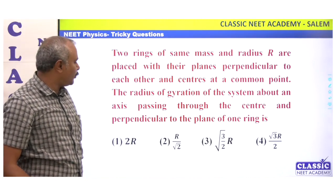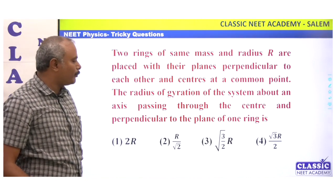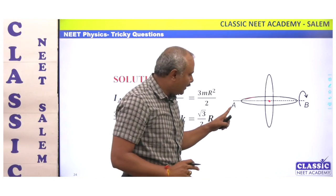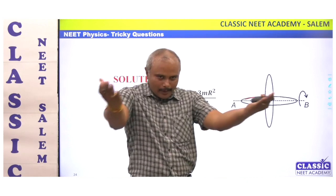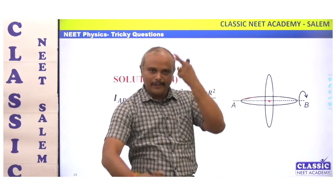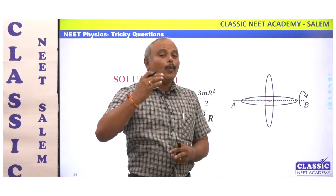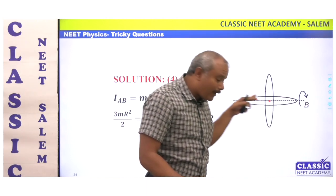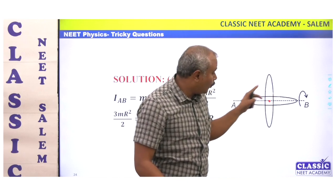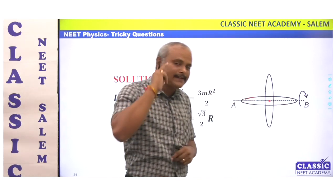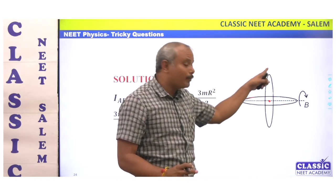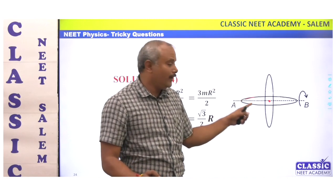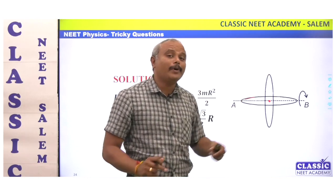The radius of gyration of the system about an axis passing through the center and perpendicular to the plane of one ring. The plane of one ring is horizontal, and the plane of the other ring is vertical.